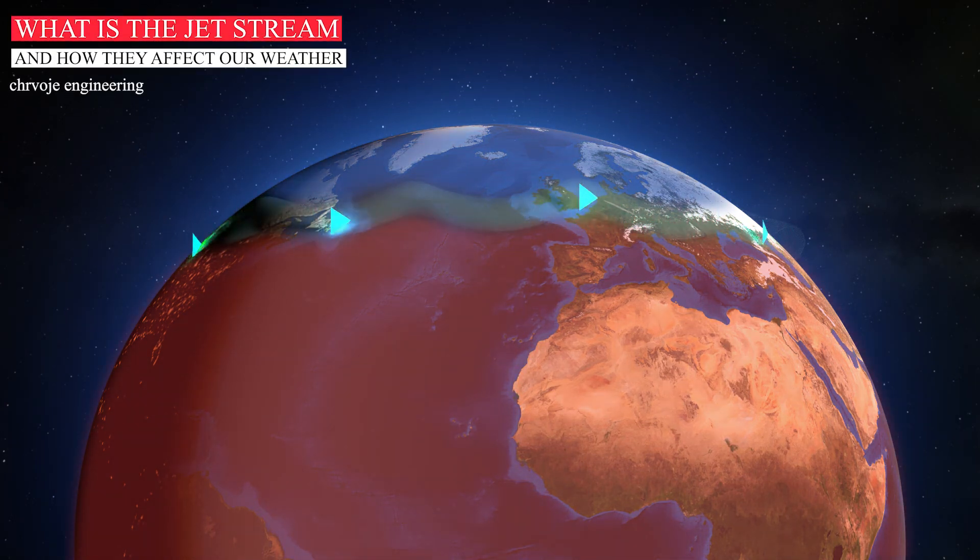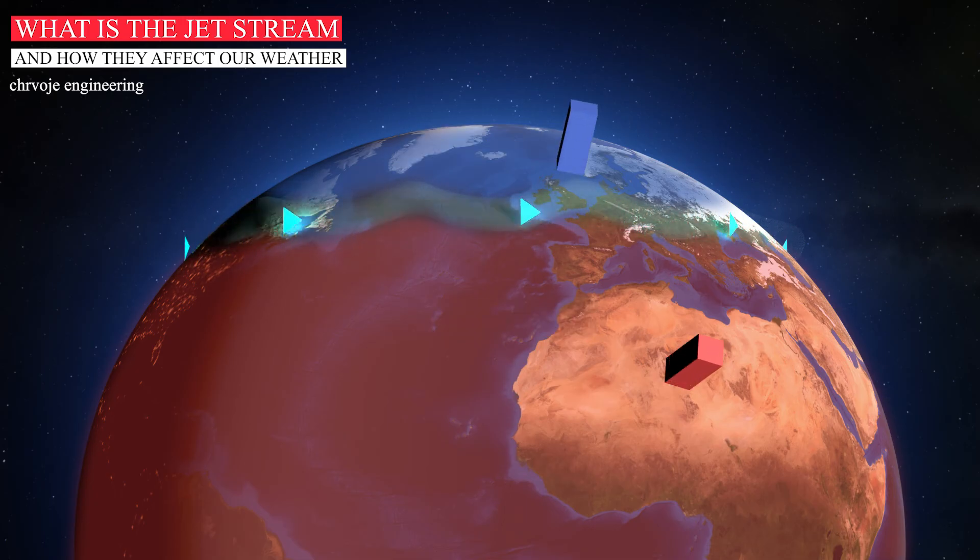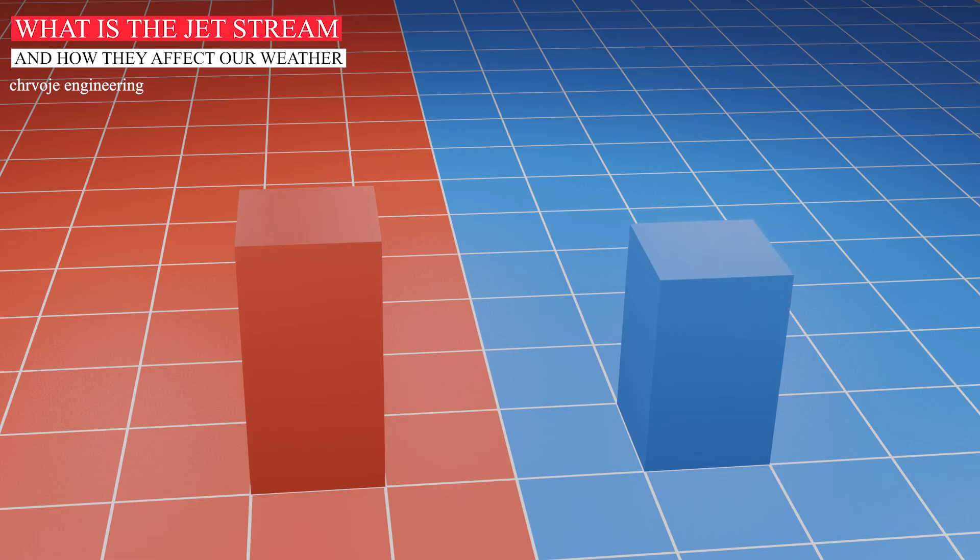The polar front jet is a type of thermal wind that arises due to the strong temperature contrasts between cold polar air and warm tropical air. To explain this further, imagine two columns of air, one in the cold air to the north side of the jet and one in the warm air to the south of the jet. The tropopause defines the top of each column.